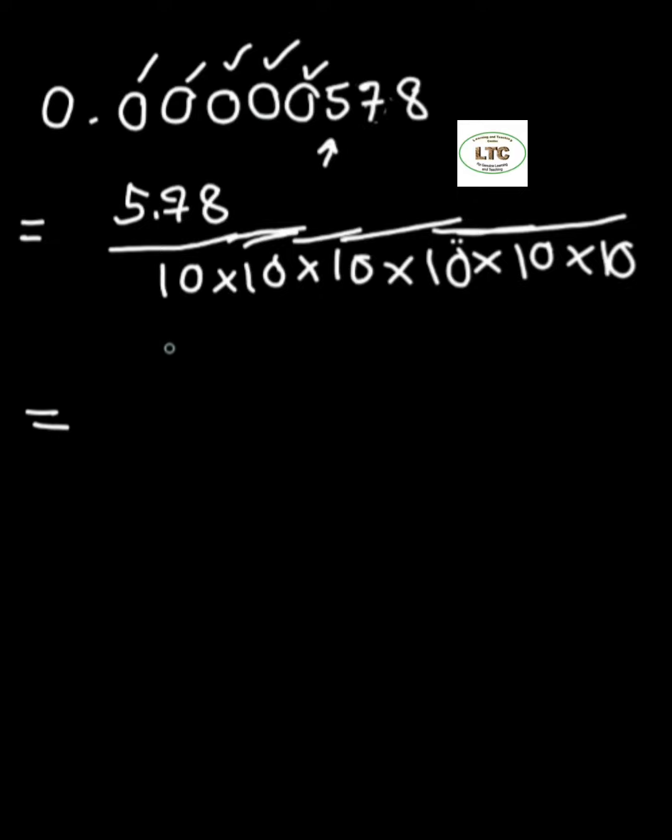So that is, you write 5.78 divided by 10 to the power 1, 2, 3, 4, 5, 6—6 times.